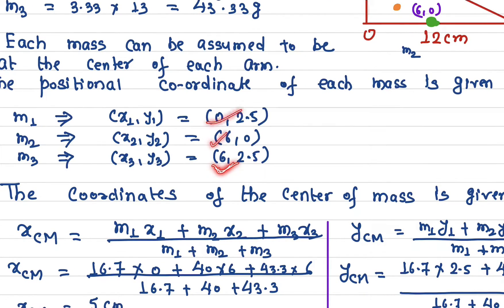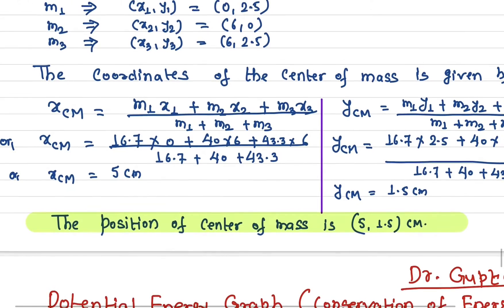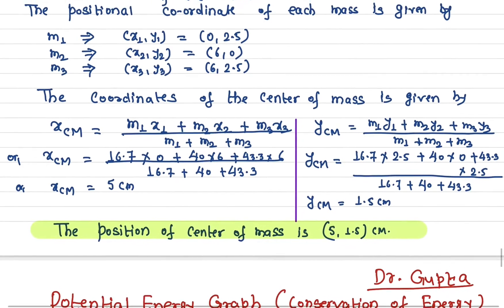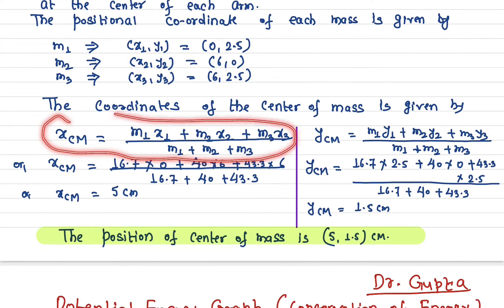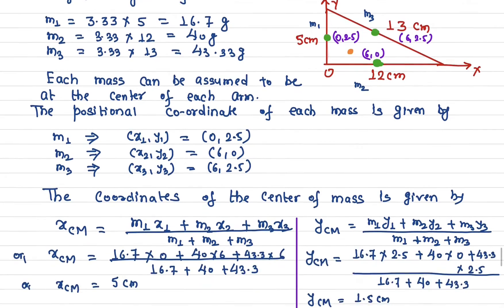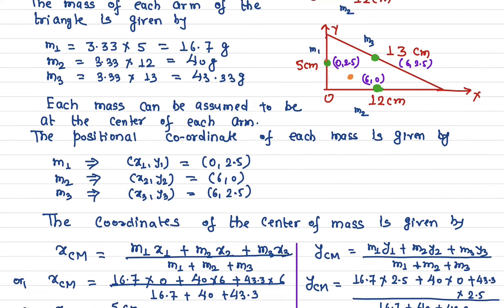Now we know the position coordinates of the center of mass of each side. The formula for finding the center of mass is: m1·x1 + m2·x2 + m3·x3, divided by m1 + m2 + m3. This formula is for discrete masses. m1 is 16.7 grams, and its x-coordinate is zero because it lies along the y-axis.